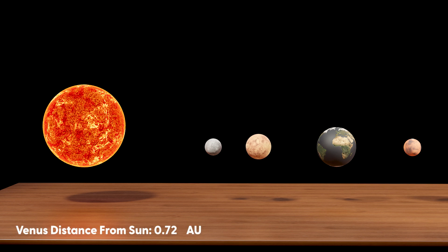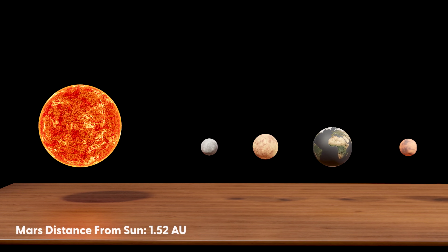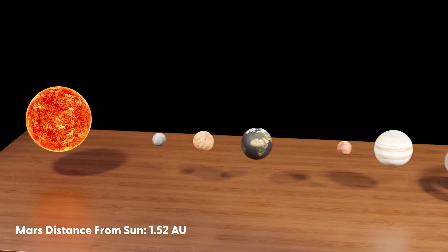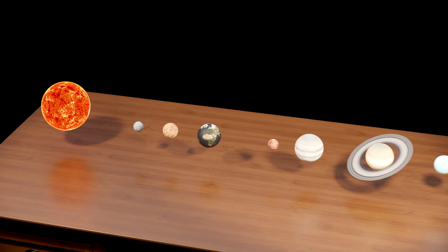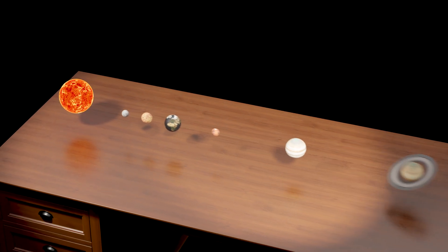Venus sits roughly between Earth and Mercury in terms of distance. Mars is located at a similar distance to Mercury, but slightly closer than Earth. Here are the remaining planets in distance from the sun.